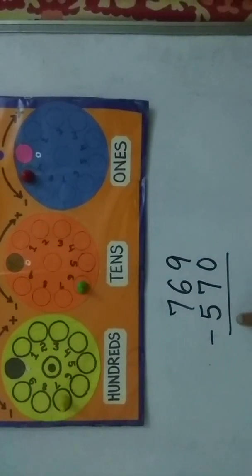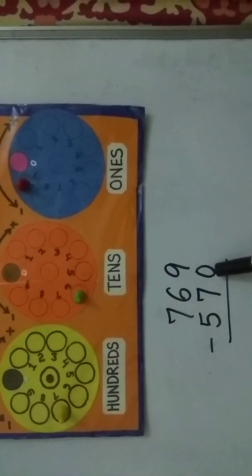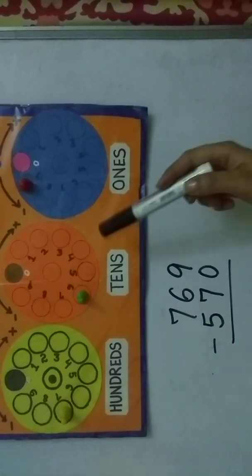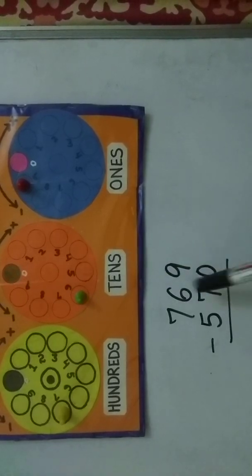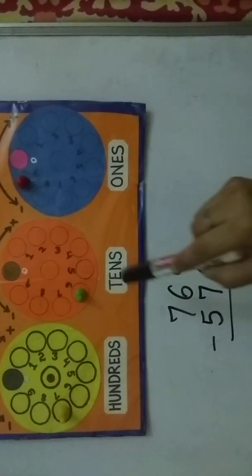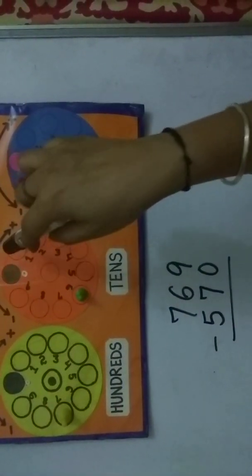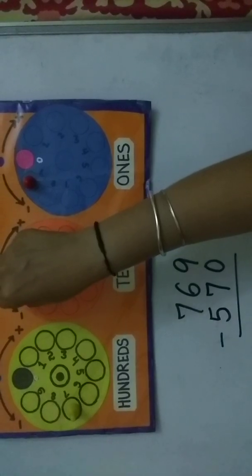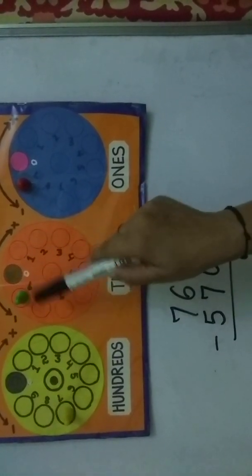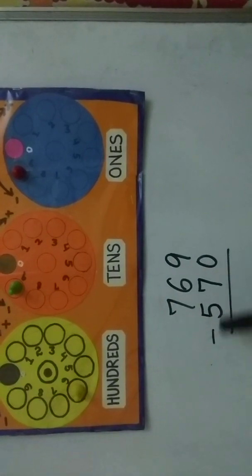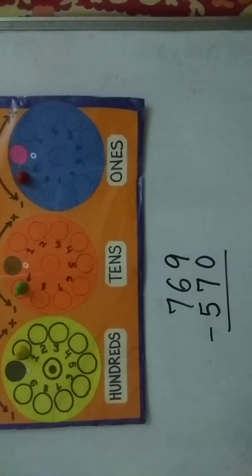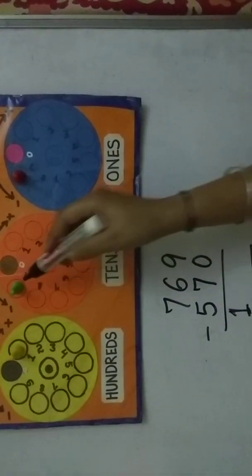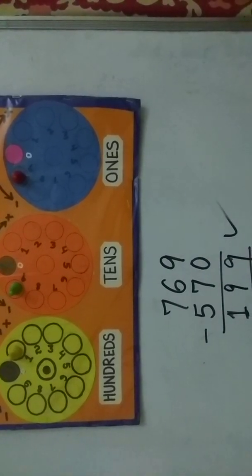Now subtract 570. The ones digit is zero, so no change needed. For the tens digit, subtract seven by moving anti-clockwise: one, two, three, four, five, six, seven. When crossing zero going backwards, immediately borrow one from the next place holder. For hundreds, move five steps back: one, two, three, four, five. The result is one hundred, nine tens, and nine ones — the answer is 199.